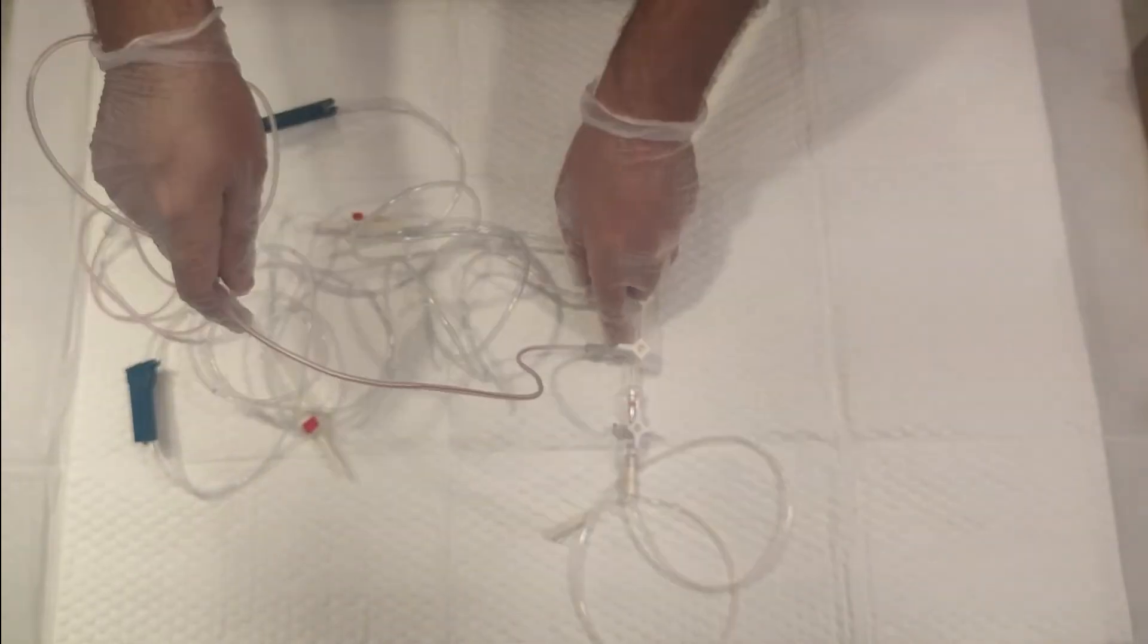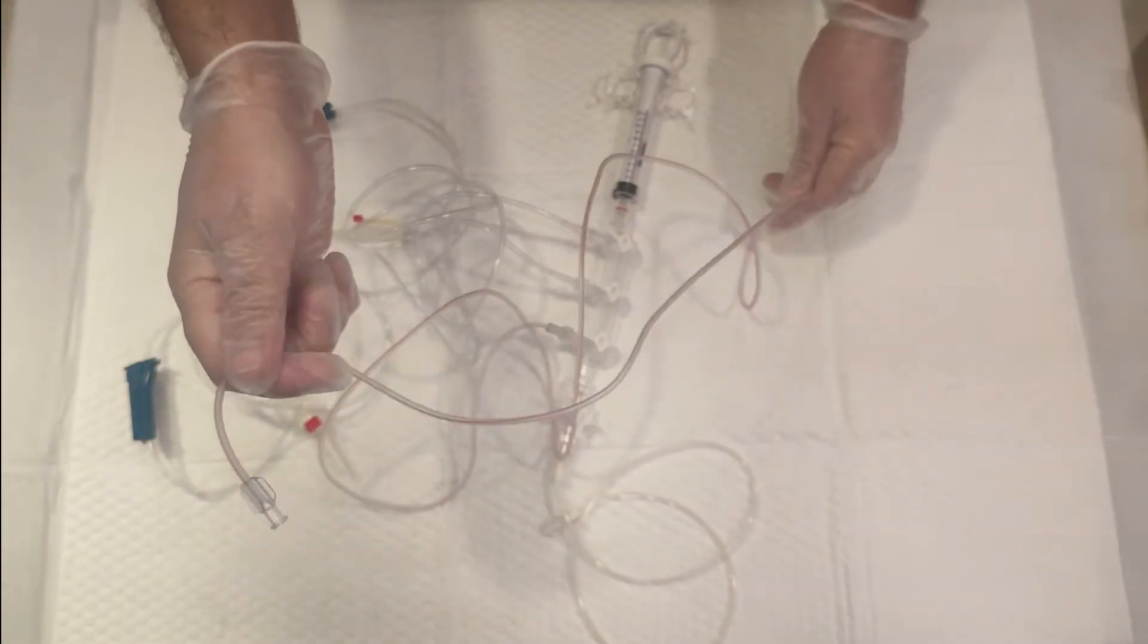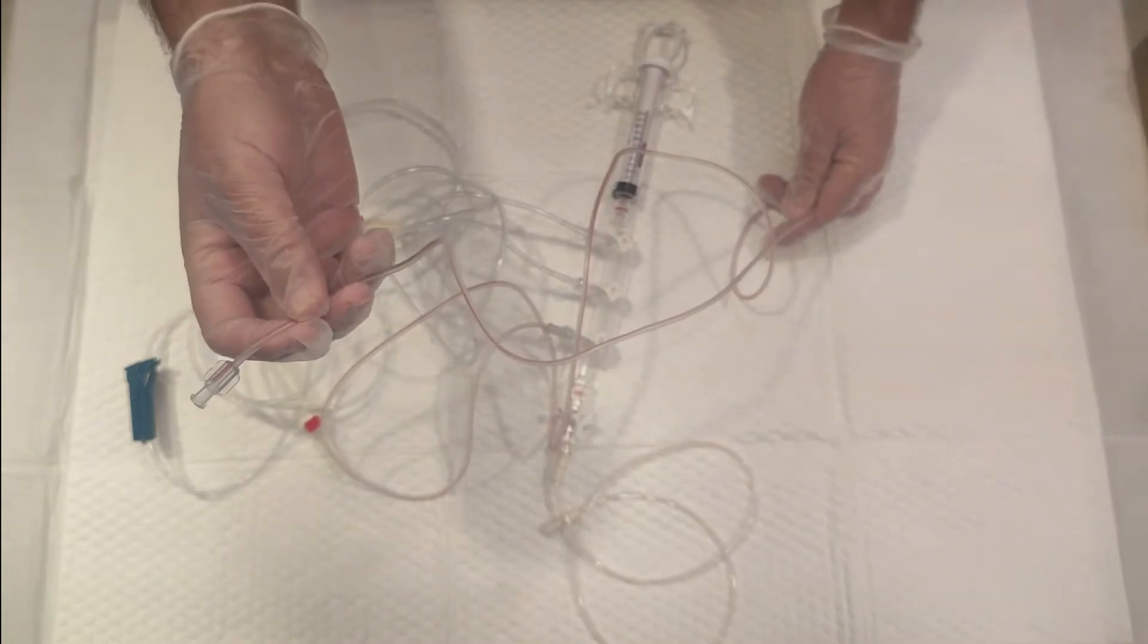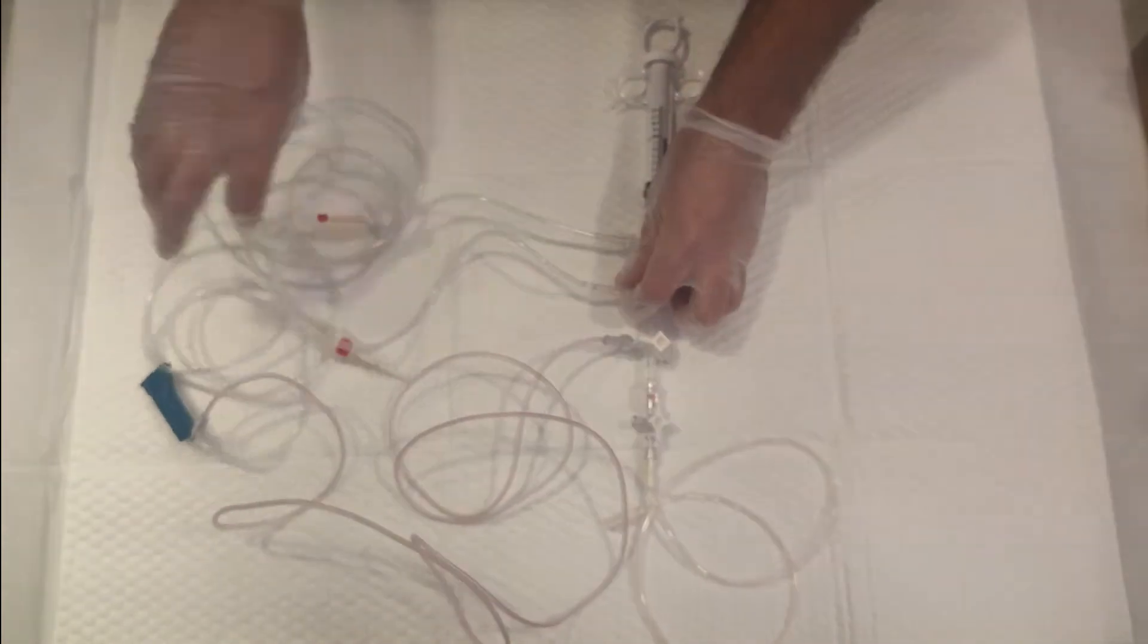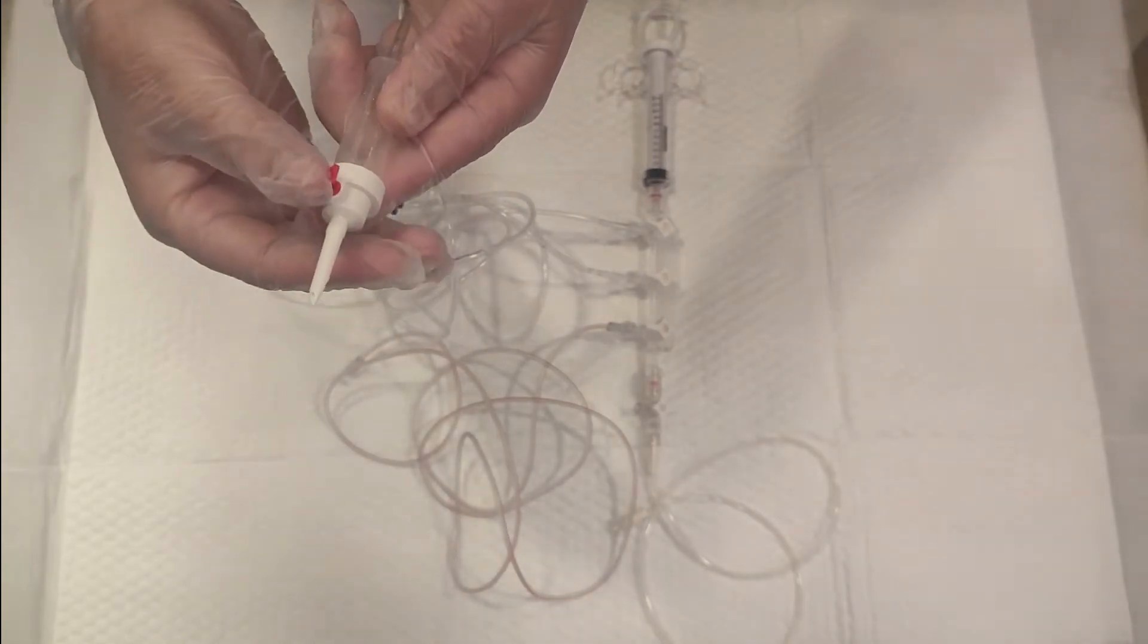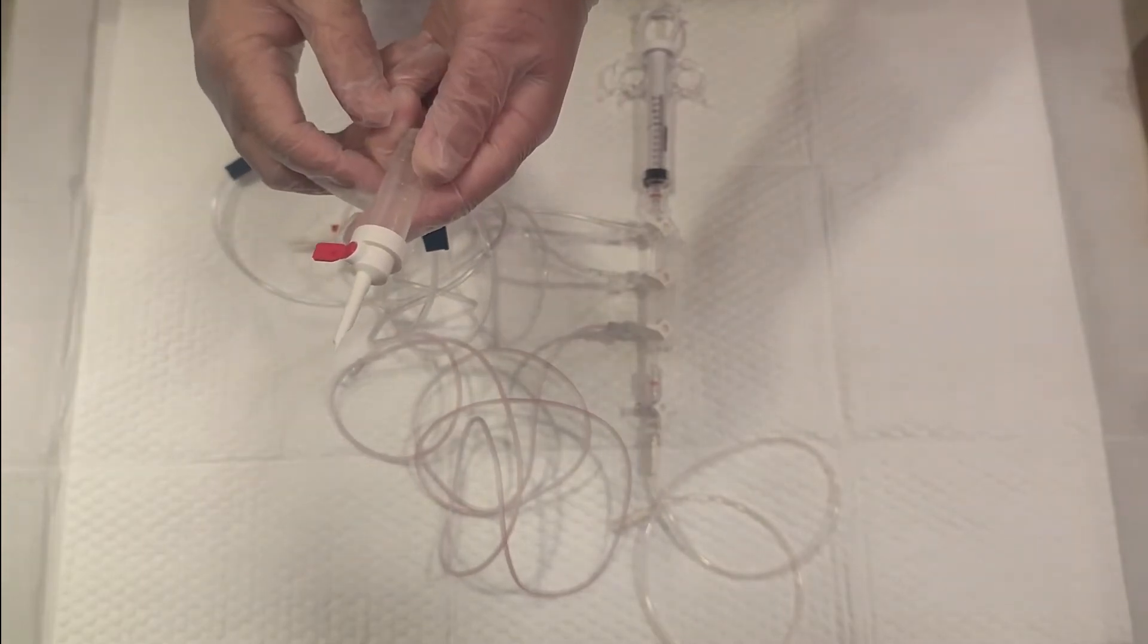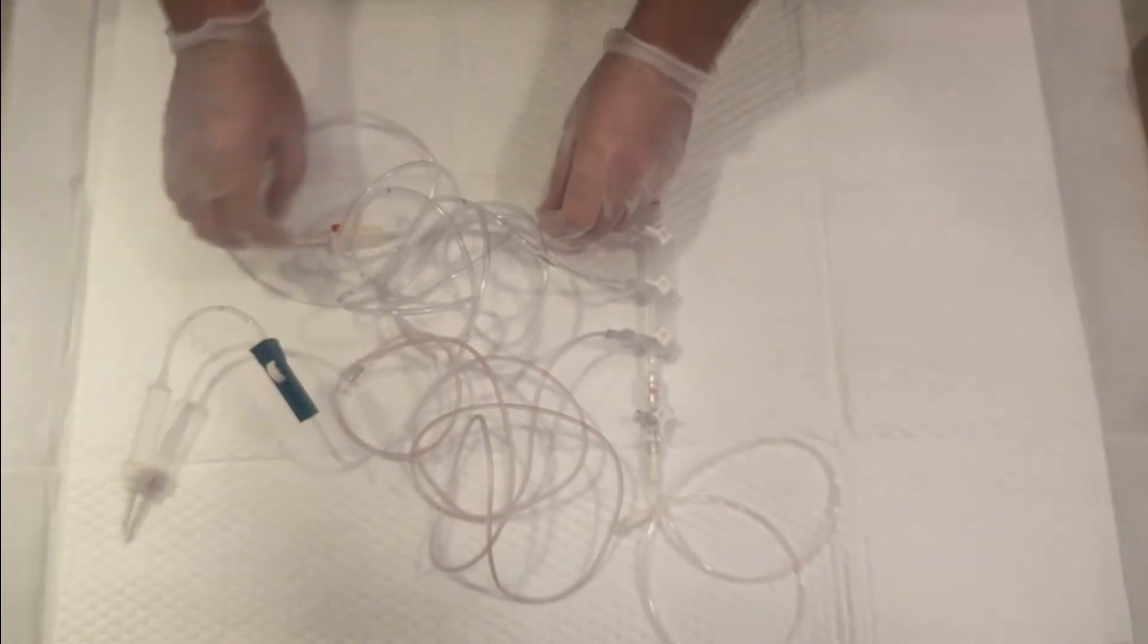This first pressure monitoring line will go to the pressure dome, which you've already prepared during the cardiac cath procedure. You'll use a pressurized bag with normal saline. The second line will go to the pressurized saline bag. Make sure this port is closed because if it's open, it will leak all the pressure.